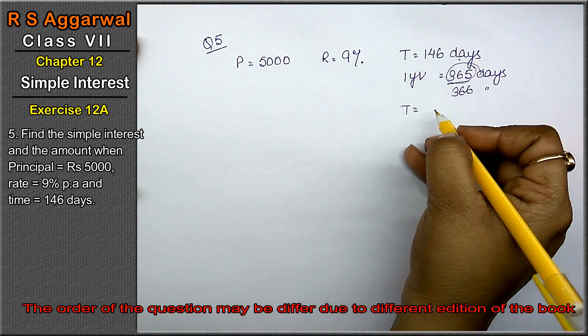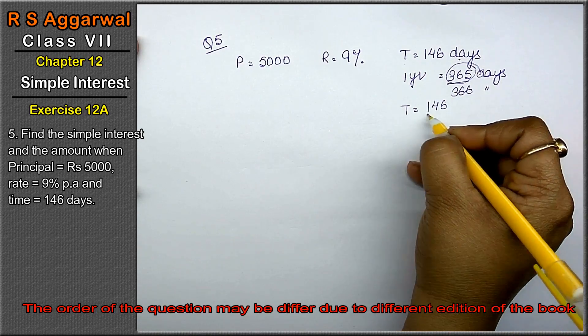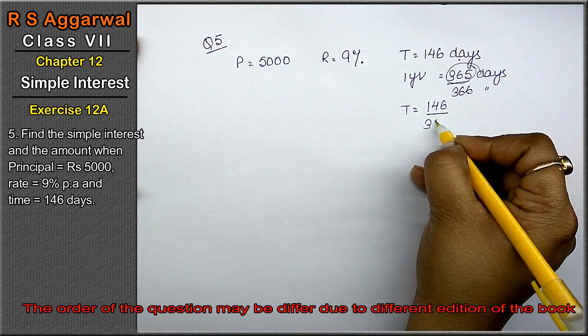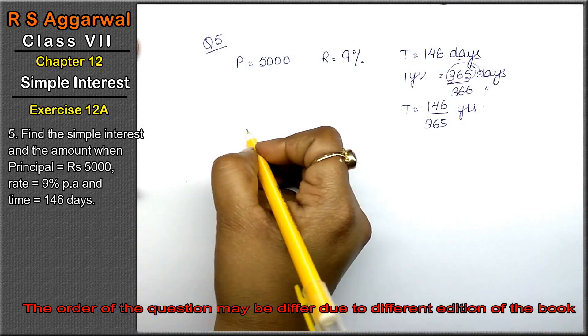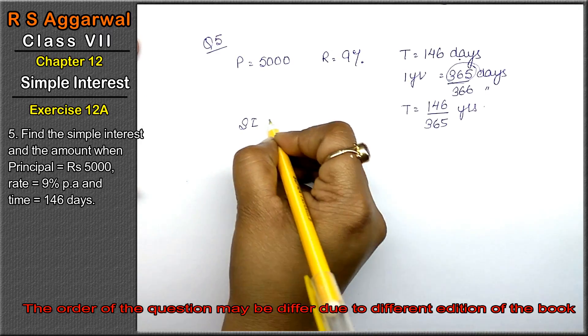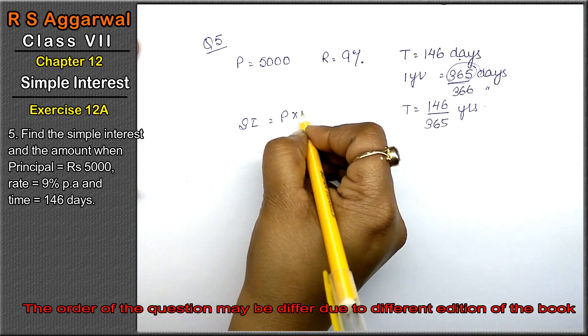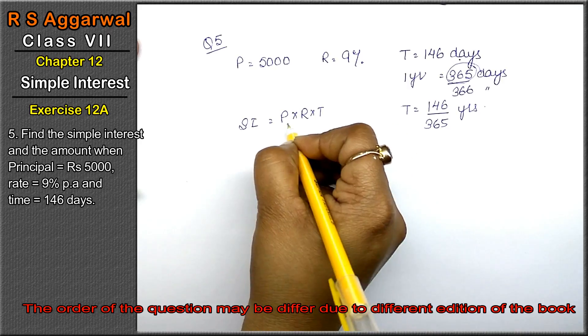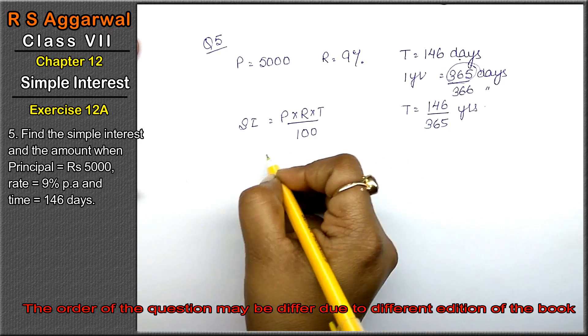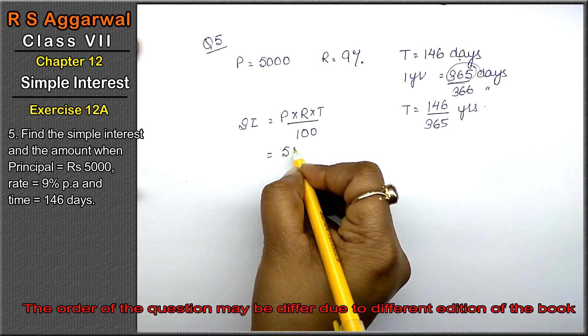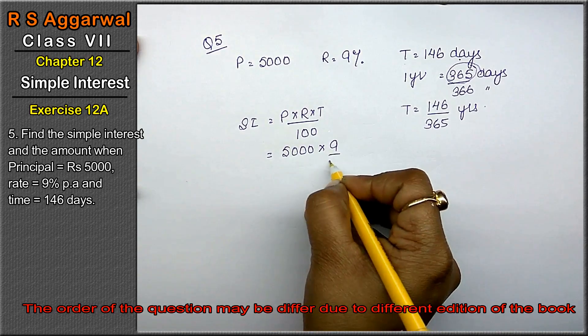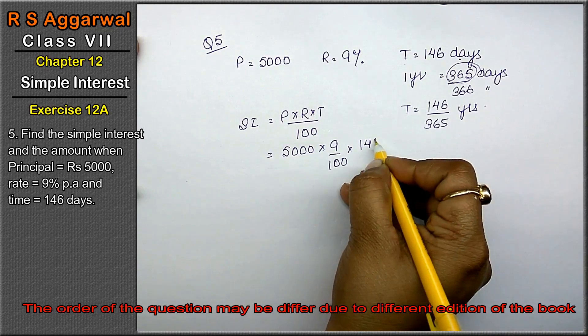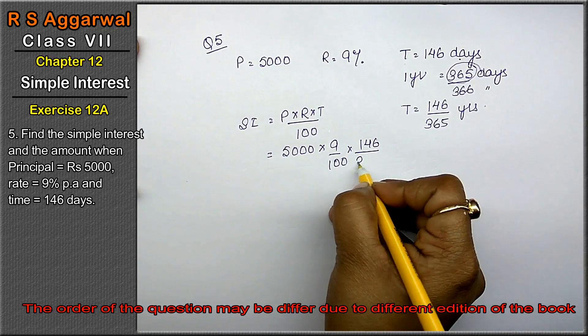Simple interest formula: P into R into T upon 100. P value is 5000, R value is 9 upon 100, and T value is 146 upon 365.